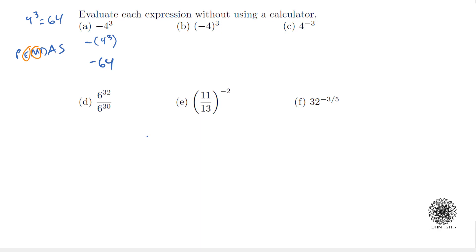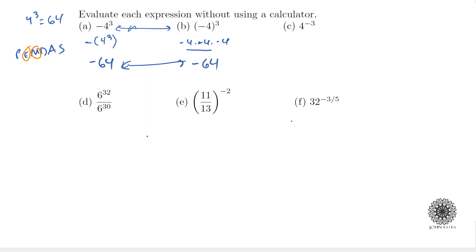The second one has parentheses, so this means (−4) × (−4) × (−4). Multiplying the first two gives positive 16, then times −4 gives −64 again. Just because we got the same answer does not mean these two expressions mean the same thing — we just got lucky here, and that won't always be the case.